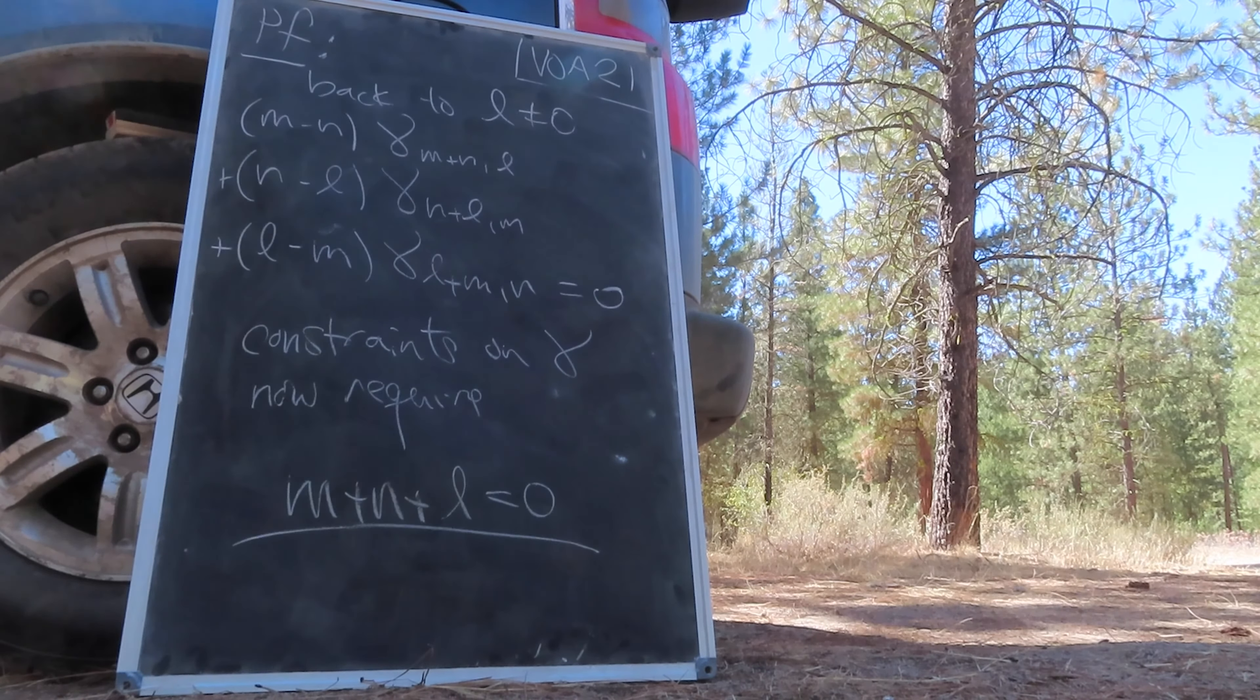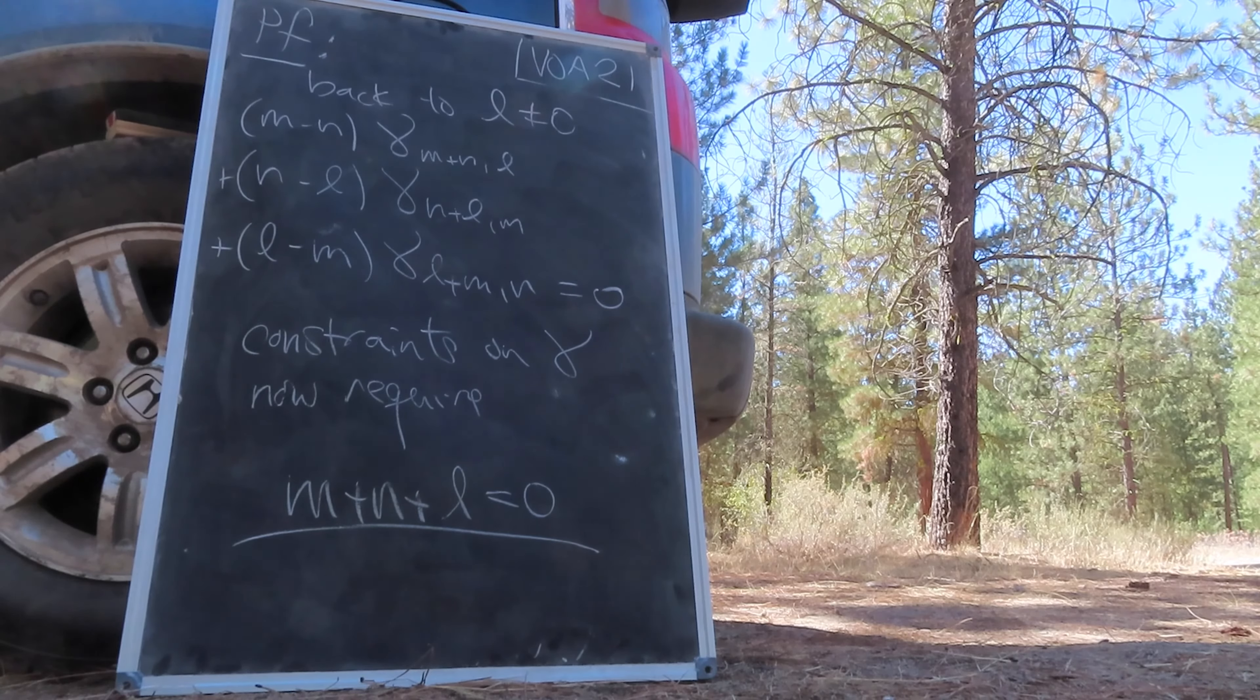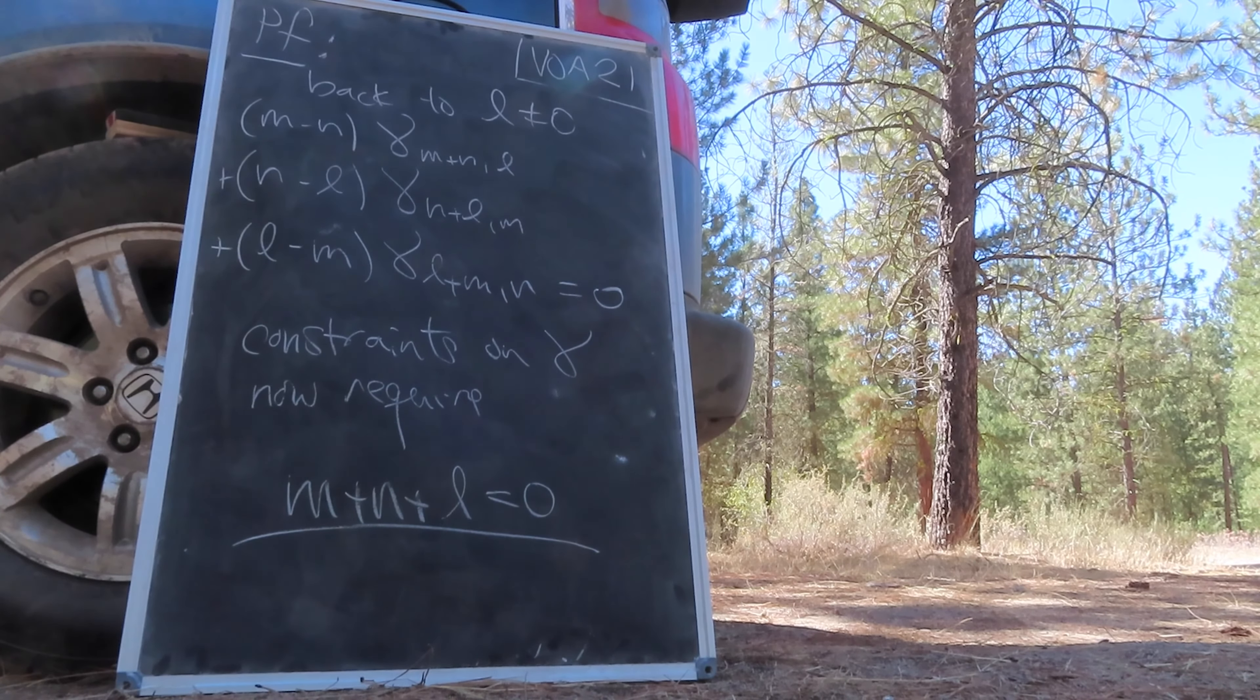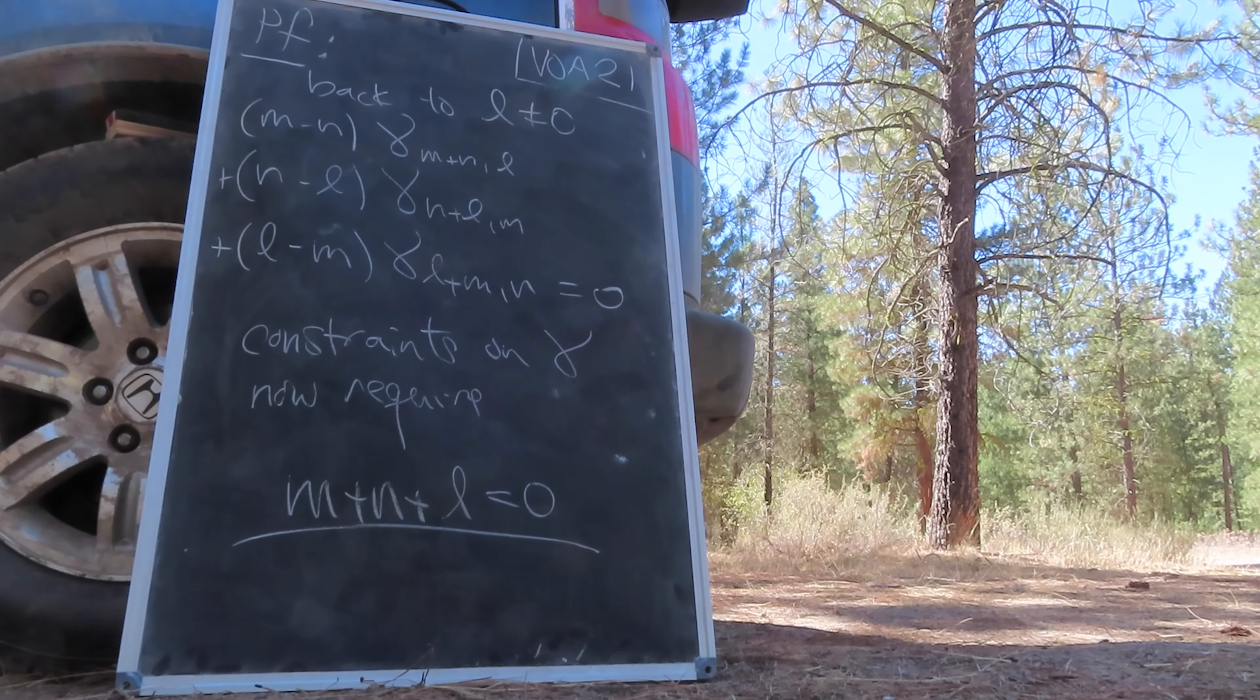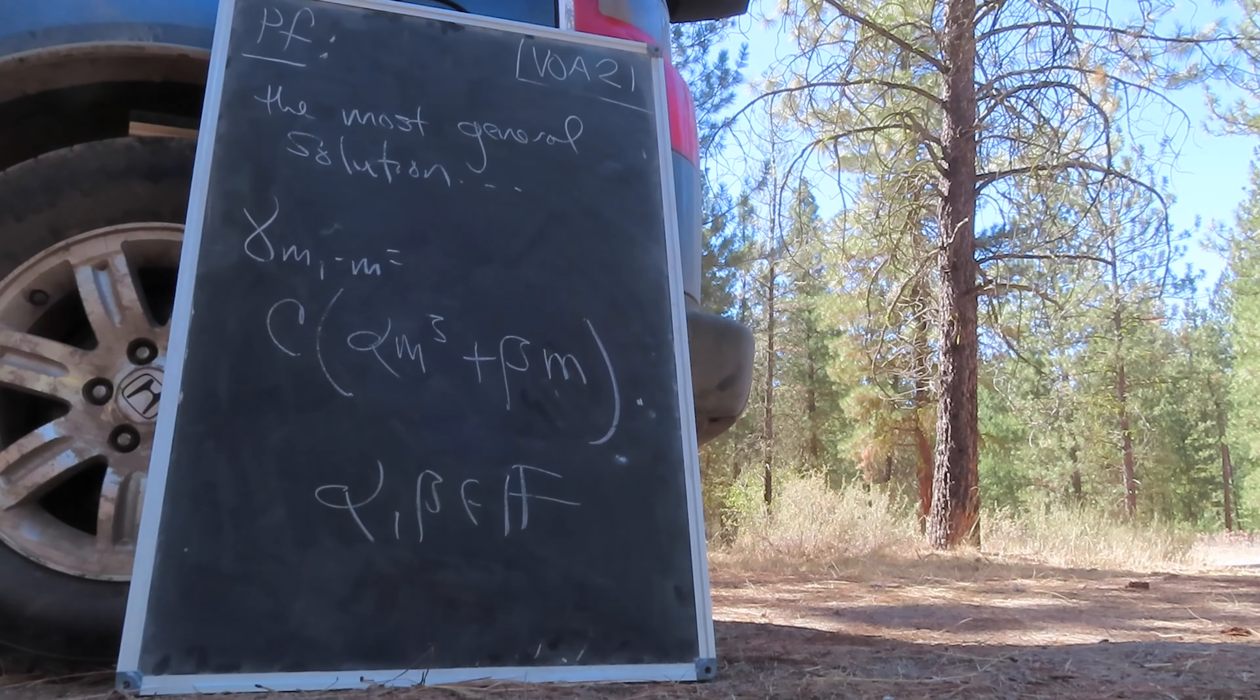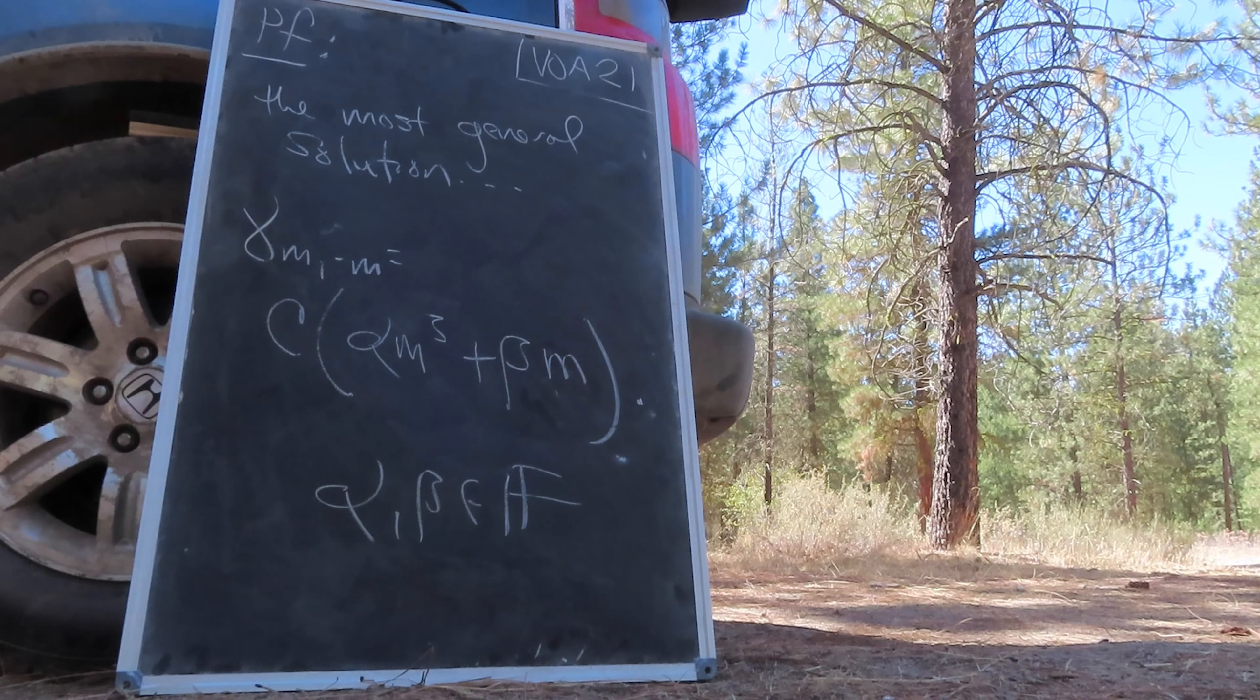These constraints now require that m plus n plus L must all vanish. This effectively reduces the relation to a function of a single number, m. The most general solution here amounts to the following: Alpha m cubed plus beta m for alpha and beta in the field f.